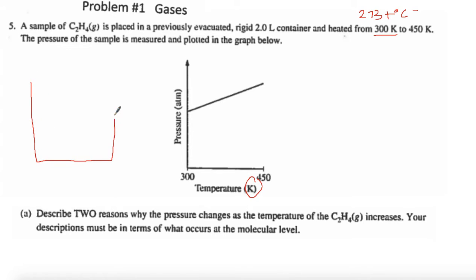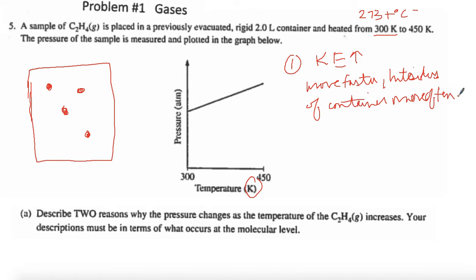Here's our sealed container and we have our molecules of ethane. Number one: what happens when we heat it up is the kinetic energy of the molecules increases, and because the kinetic energy of the molecules increases they are moving faster and they hit the sides of container more often.